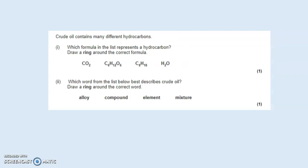Now let's look at the next question. Crude oil contains many different hydrocarbons. Which formula in the list represents a hydrocarbon? You have to draw a ring around the correct formula. You could pause the video now and come back to check your work. Hydrocarbon, as the name indicates, contains only carbon and hydrogen. So you cannot have these. That is an example of hydrocarbon.